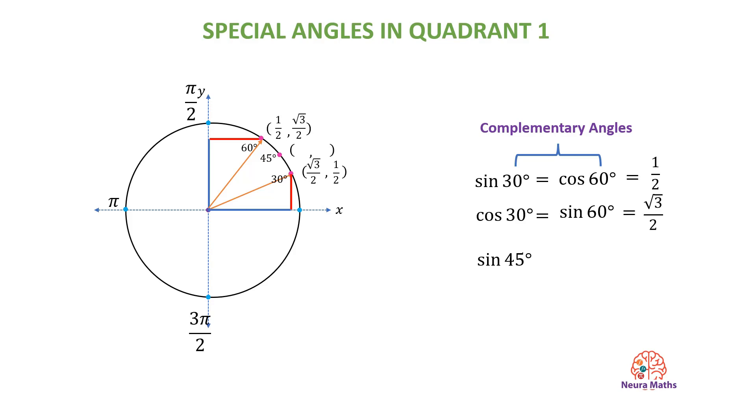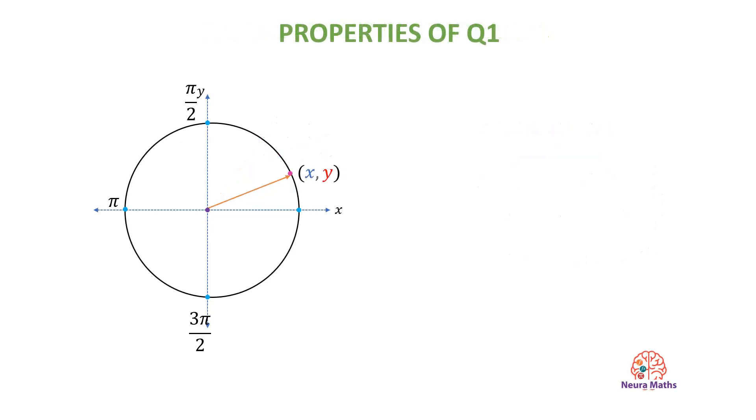The sine of 45 is root 2 over 2. What is the cosine of angle 45? The cosine of angle 45 is root 2 over 2. So, the trig function of any angle is equal to the co-function of its complementary.